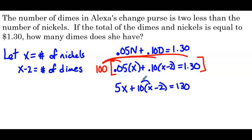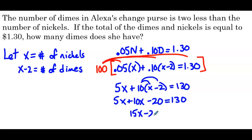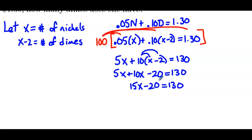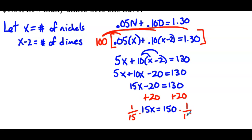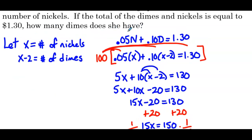Distributing the 10, we get 5x plus 10x minus 20 equals 130. Combining like terms: 15x minus 20 equals 130. Adding 20 to both sides gives 15x equals 150. Dividing by 15, x equals 10. Rereading the problem: how many dimes does she have? If x equals 10, then x minus 2, which is 8, is the number of dimes.